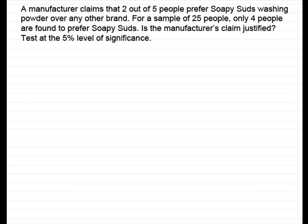Hi, welcome to this example on hypothesis testing for the proportion P of a binomial distribution. In this example, I'm going to show you how we can use the critical value method of finding out whether to accept or reject H0. The manufacturer claims that 2 out of 5 people prefer Soapy Suds washing powder over any other brand. For a sample of 25 people, only 4 people are found to prefer Soapy Suds. So is the manufacturer's claim justified? We're going to test this at the 5% level of significance.